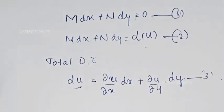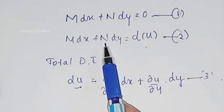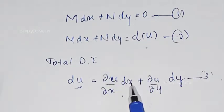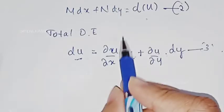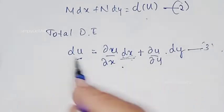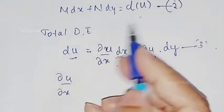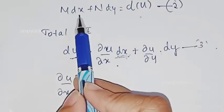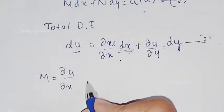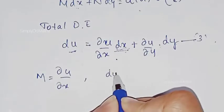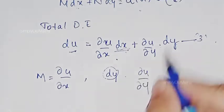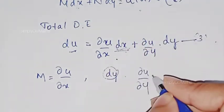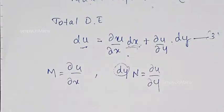Here, u is a function of x and y. Comparing equation 3 and equation 2: the coefficient of dx is ∂u/∂x, and in equation 2 the coefficient of dx is M. So M = ∂u/∂x. Similarly, the coefficient of dy is ∂u/∂y, and in equation 2 it is the value of N. So N = ∂u/∂y.